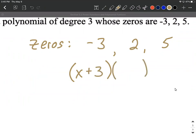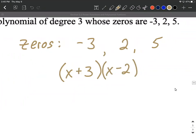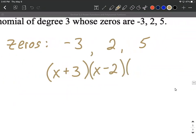If two is a zero x minus two has to be a factor and if five is a zero x minus five has to be a factor. And we can kind of double check this by saying if I plug the five in for this x five minus five makes zero therefore this whole factor equals zero therefore our entire function is going to equal zero. Same thing with our two here and our negative three going in for this x.